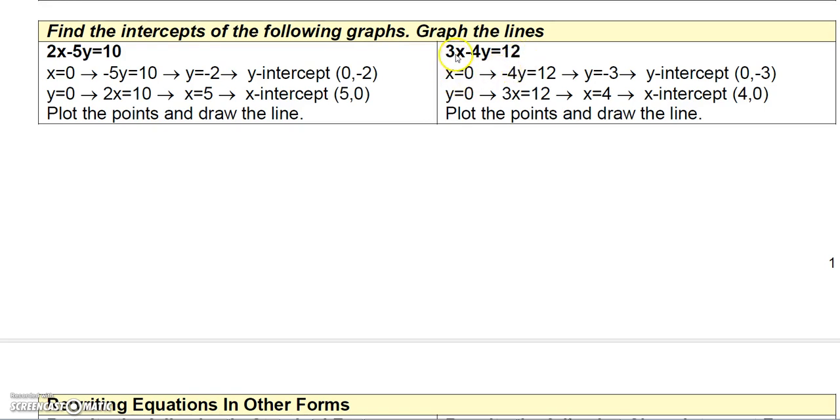So here if we let x be 0 then we would get minus 4y equal 12. And then if you divide both sides by negative 4 you get y equals negative 3. So the y-intercept would be the point (0, -3).